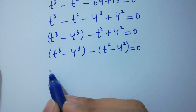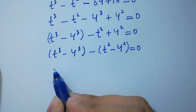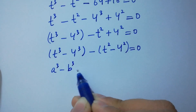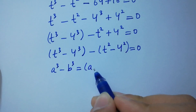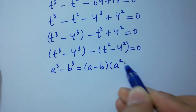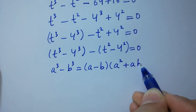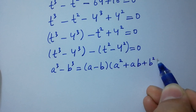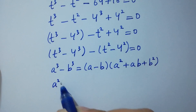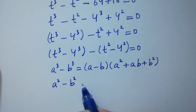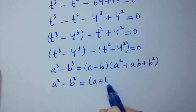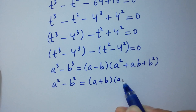As we know, a cube minus b cube equals (a minus b)(a square plus ab plus b square), and a square minus b square equals (a plus b)(a minus b).